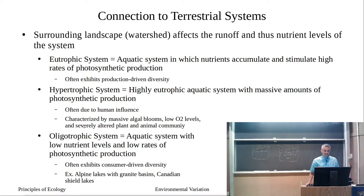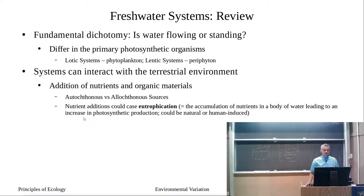Instead of a bottom-up response driven by primary production, oligotrophic lake communities are consumer-driven — a top-down type of community — where the top predator ultimately determines how many individuals and types of species can exist below it. We'll talk more about bottom-up versus top-down effects later. The oligotrophic system has less photosynthesis, and could have nutrients locked away in the hypolimnion.